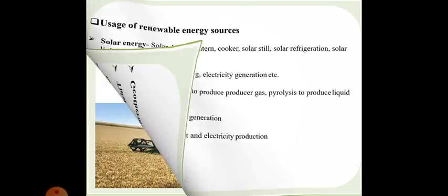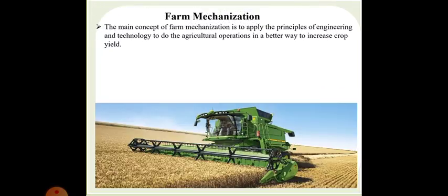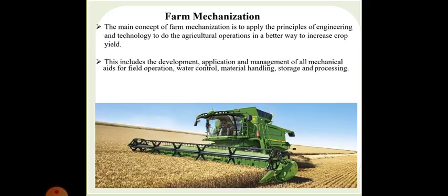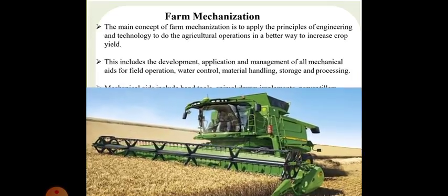Farm power also includes farm mechanization. Basically farm mechanization is the main concept to apply the principles of engineering and technology to do the agricultural operations in better way to increase the crop yield. This includes the development, application and management of all the mechanical aids for field operation, water control, material handling, storage and processes. The mechanical aid includes hand tools, animal drawn implements, power tillers, tractors, engines, electric motors, grain processing and hauling equipment. You can observe this is a thresher used for hectares of land.